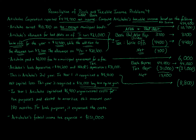In year one, Artichoke capitalized $6,900 of organizational costs for tax purposes and elected to amortize over 180 months. Taking $6,900 divided by 180 months, then multiplied by 12 months for the second year equals $460. For book purposes in year one, it was all expensed. This year, there's no book expense, but for tax we get to subtract the $460 amortization — it's a timing difference.